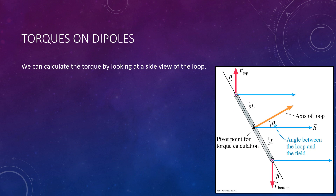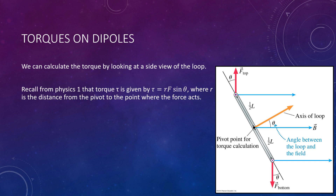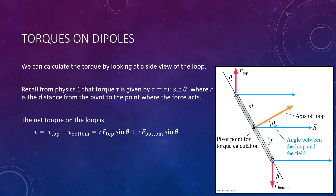Let's step through our calculation of this torque. We'll pull in the equation from Physics 1: torque, or tau, is given by RF sine of theta, where R is the distance from the pivot at the center to where the force is applied at the top or the bottom, F is the force, and theta is the angle between the field and the axis of the loop. We have two forces here — the force on the top and the force on the bottom — so we have two torques to take into account. The net torque is the sum of those two: RF sine theta for the top, plus RF sine theta for the bottom.